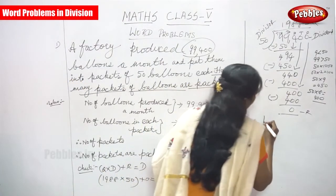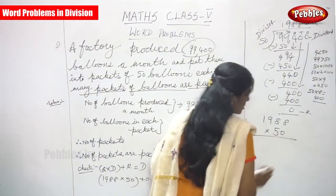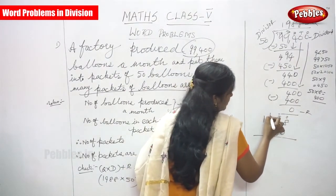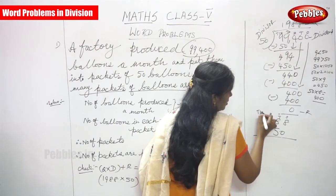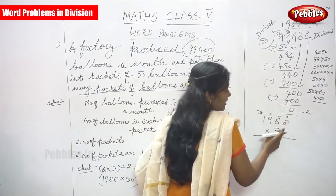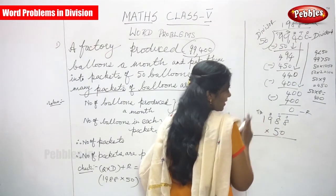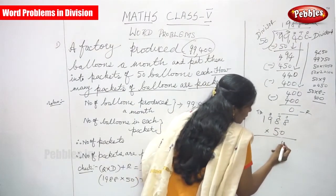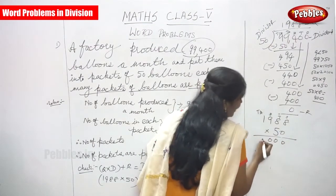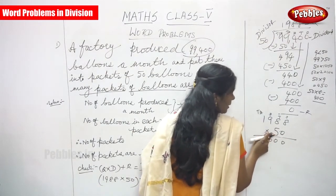I am going to multiply 1,988 into 50. Place value: start with 0. Any number multiplied by 0 gives 0. So 0 into 8 is 0, 0 into 8 is 0, 0 into 9 is 0, 0 into 1 is 0 — all are 0. Next, you have to multiply by 5.